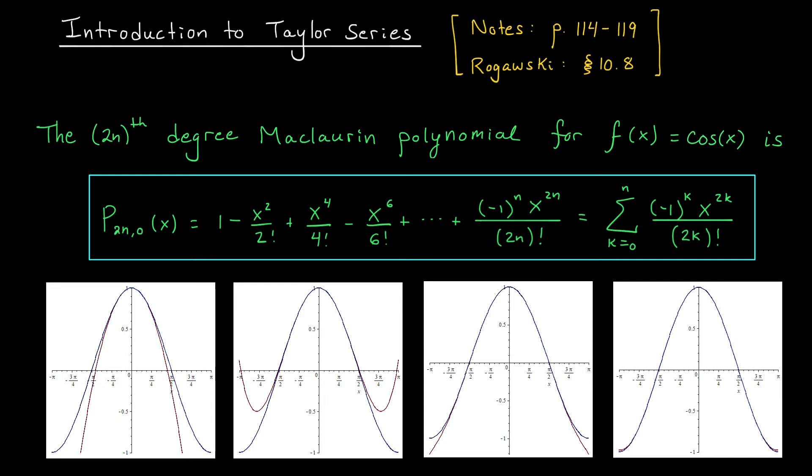We can express these polynomials very compactly in sigma notation. Here we have a sum from k equals 0 to n of (-1)^k x^(2k) divided by (2k)!. Now down below I've graphed some of these polynomials in red alongside the function y = cos(x) in blue. Here's the polynomial of degree 2, degree 4, degree 6, and degree 8.